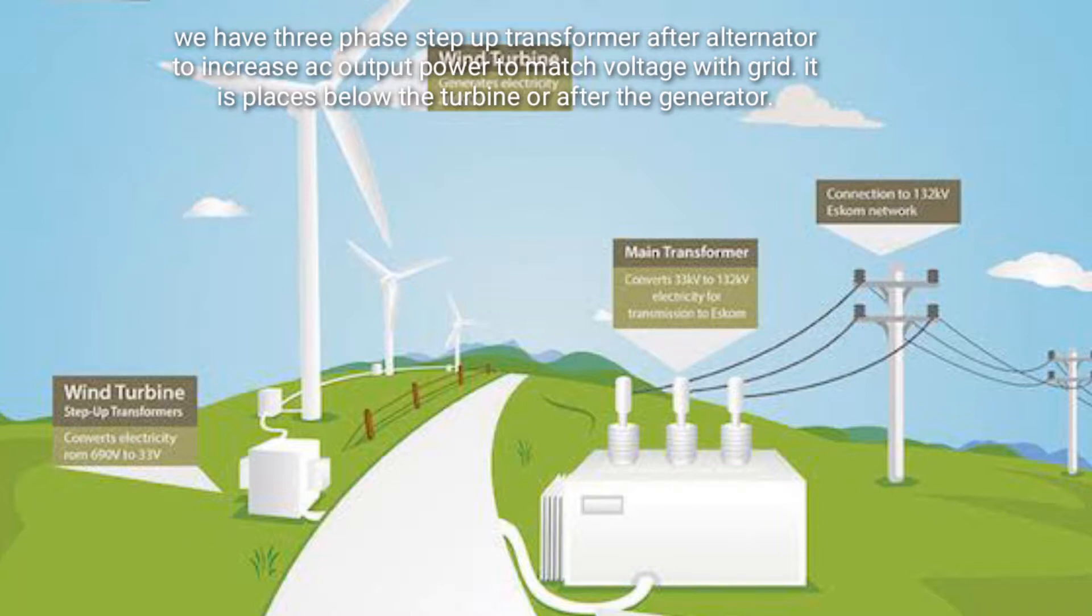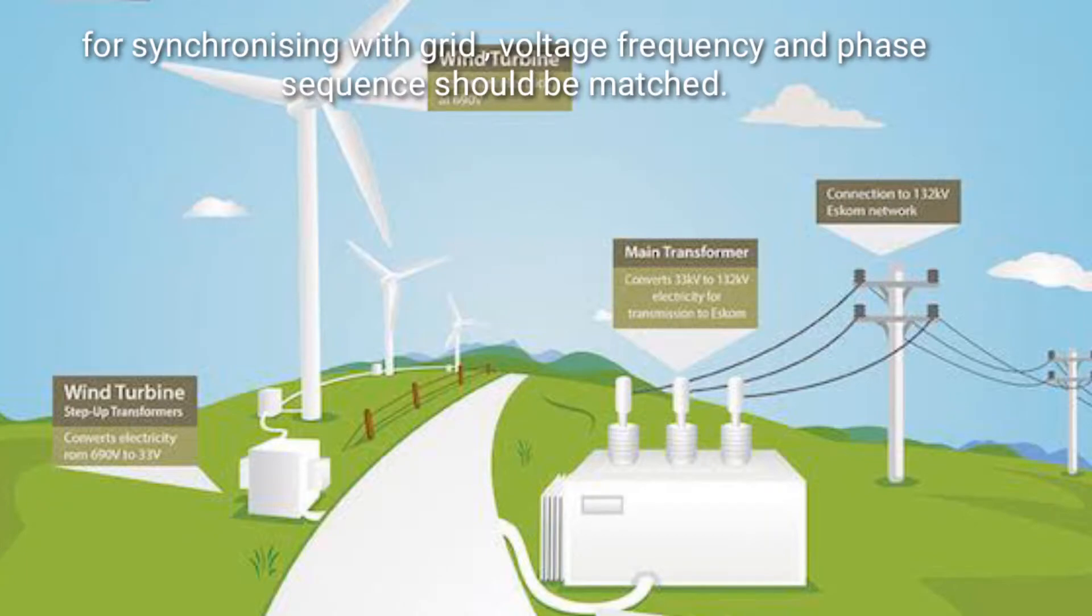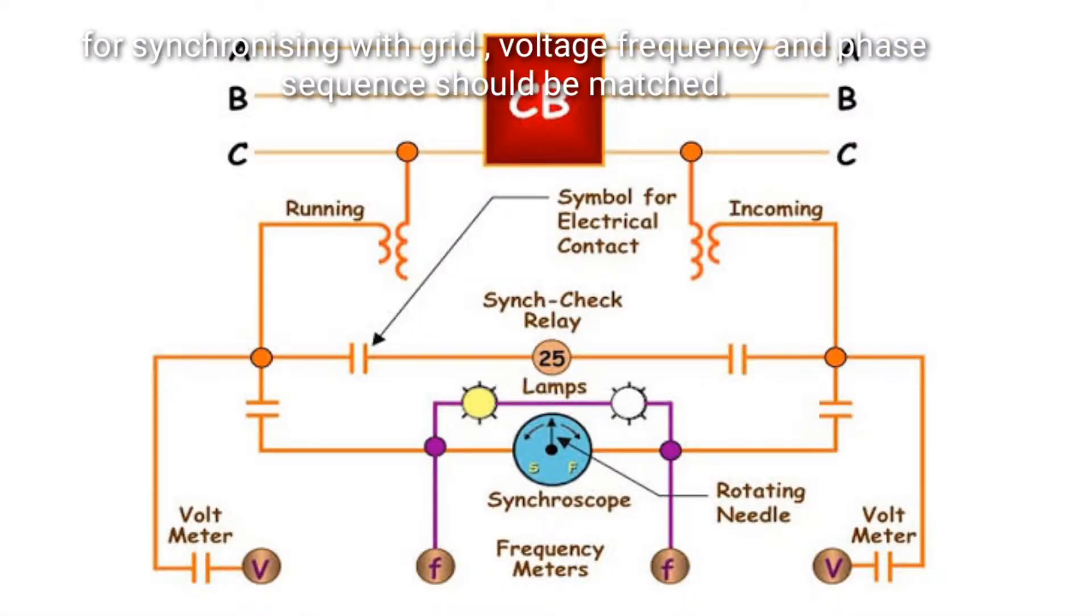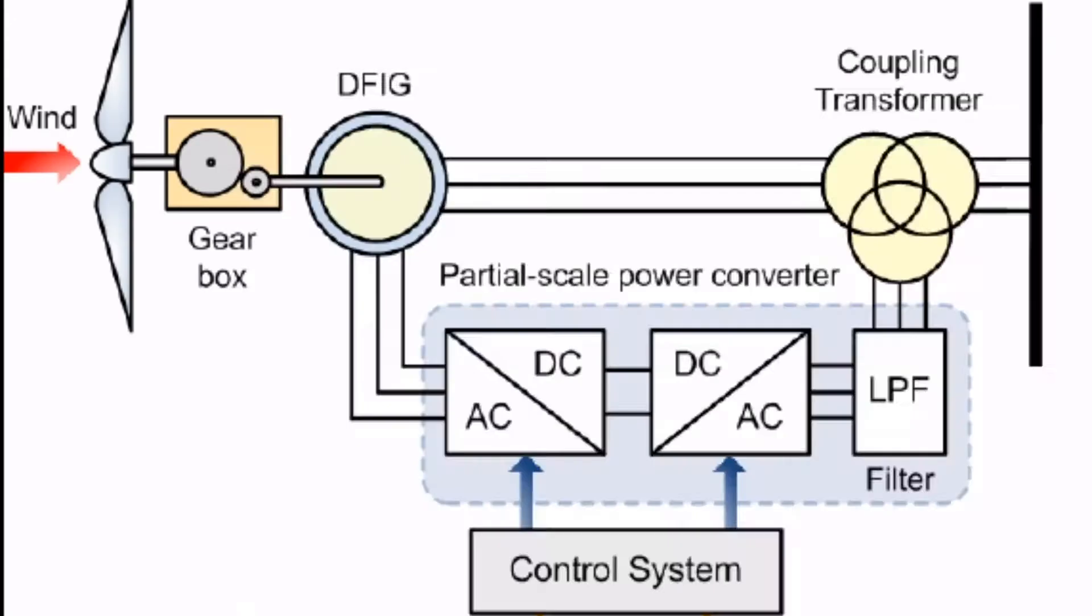It is placed below the turbine or after the generator for synchronizing with the grid. Voltage frequency and phase sequence should be matched.